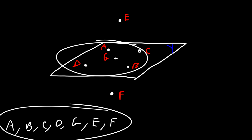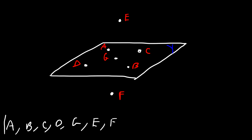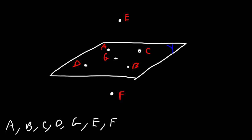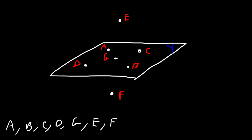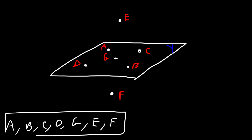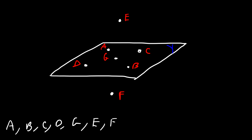These five points are coplanar. These six are not coplanar because E is not on plane Y. And these seven points are also non-coplanar points.